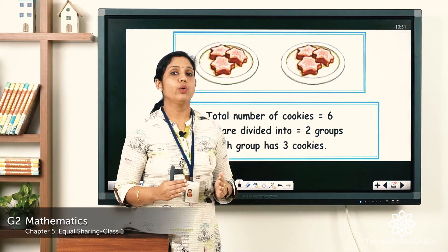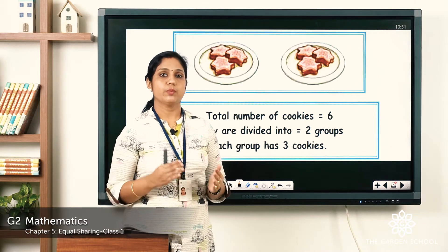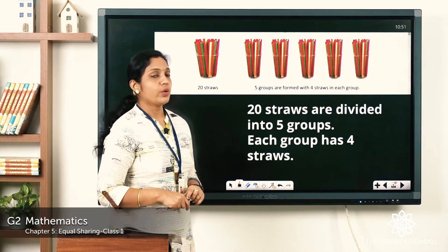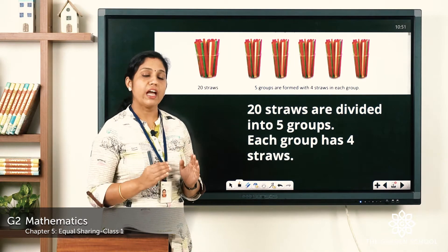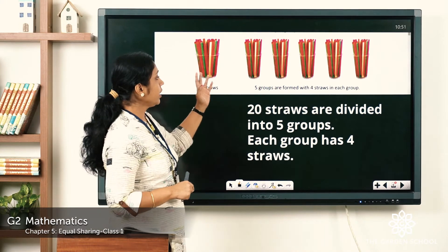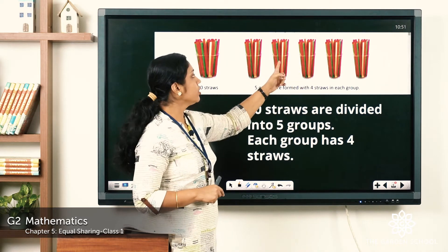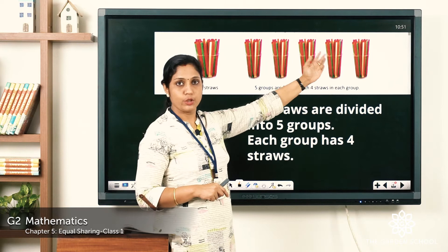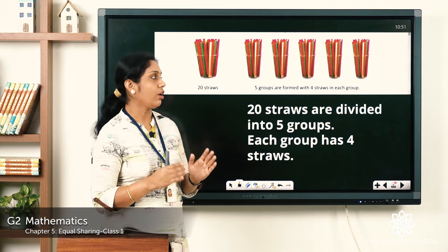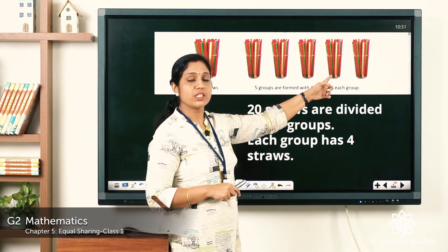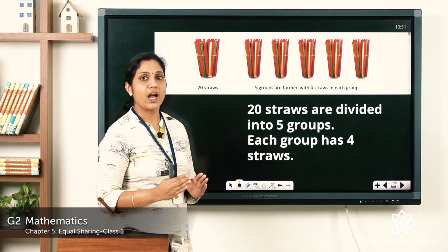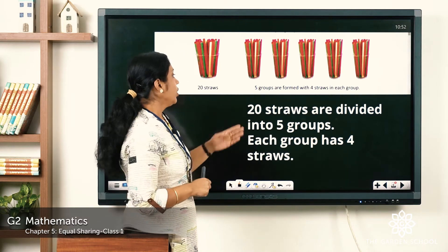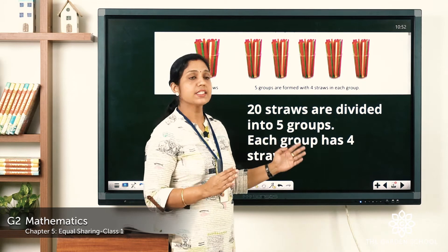We are now going to learn about division. In previous chapters we learned addition, subtraction, and multiplication. Here you can see 20 straws. We have to equally divide them — they are divided into five groups. We need to find out if they are equally divided. Five groups are formed with four straws in each group. So 20 straws are divided into five groups, and each group consists of four straws.